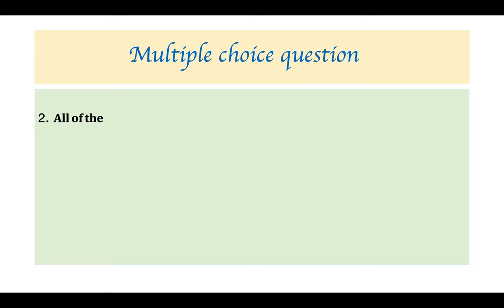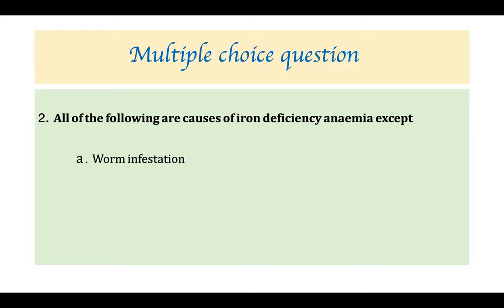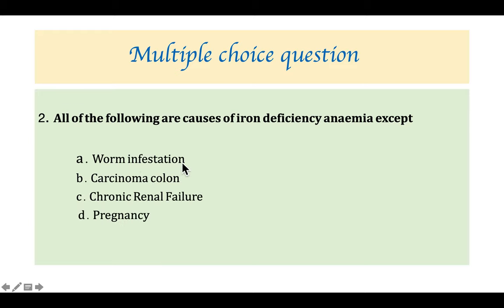All of the following are causes of iron deficiency anemia except: worm infestation — definitely a cause, seen in children. Carcinoma colon — causes iron deficiency anemia due to GI bleeding. Pregnancy — increased iron demand causes iron deficiency anemia. Chronic renal failure — presents with normocytic normochromic anemia, not iron deficiency anemia. So the answer is chronic renal failure.